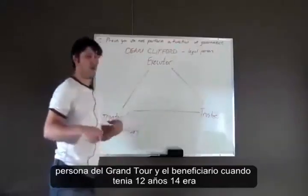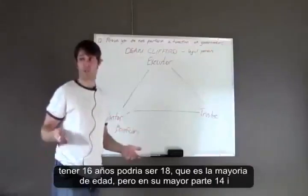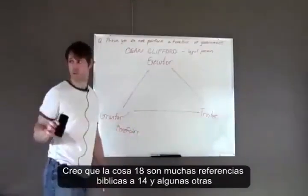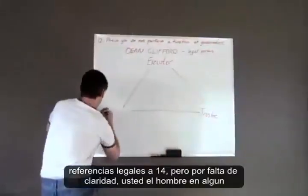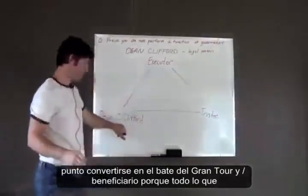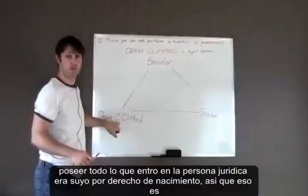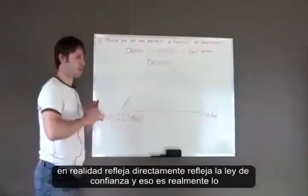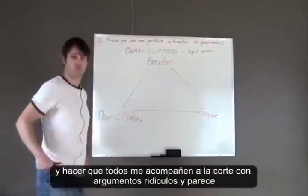The grantor and beneficiary, when you were age 1 to 14, was your parents. When you became 14 — or 16 or 18 at the age of majority — you, the man, become the grantor and beneficiary. Because everything you own, everything that went into the legal person, was yours by birthright. So that's what makes you the grantor and the beneficiary of everything in the legal person. Now we're going to make the switch to corporate law, which directly mirrors trust law — a corporation is a trust. They just call it something else to confuse people and get everybody walking into court making ridiculous arguments, and it seems to have worked pretty well for about 2,000 years.